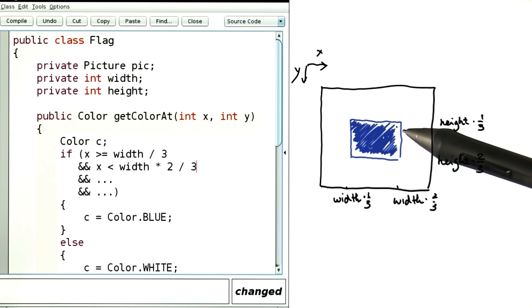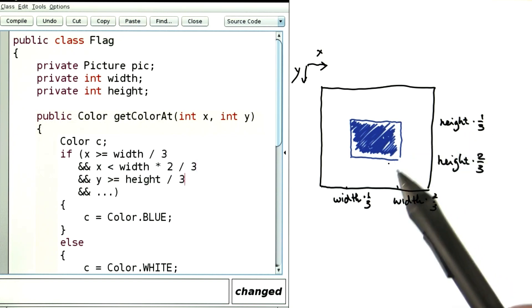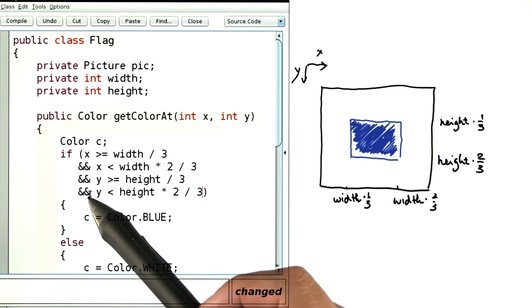The y value should be at least height over 3, and it should be at most twice that. So here are my four conditions joined by AND.